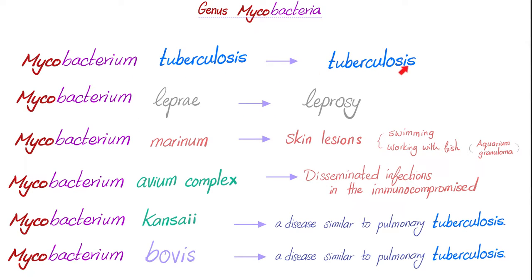Is Mycobacterium tuberculosis the only mycobacterium out there? No — there are over a hundred of these. The most common in human diseases: Mycobacterium tuberculosis causes tuberculosis. Mycobacterium leprae causes leprosy. Mycobacterium marinum, from the marine environment, causes skin lesions after swimming or working with fish — that's why we call it aquarium granuloma. Mycobacterium avium complex (MAC) causes disseminated infections in immunocompromised persons. Mycobacterium kansasii, discovered in Kansas, causes a disease similar to pulmonary tuberculosis. And so does Mycobacterium bovis.